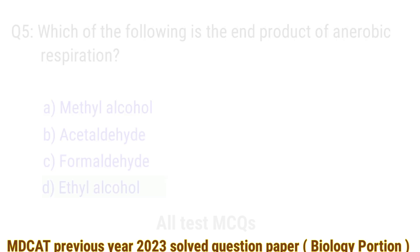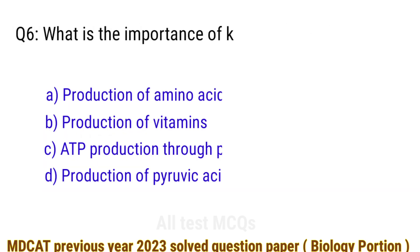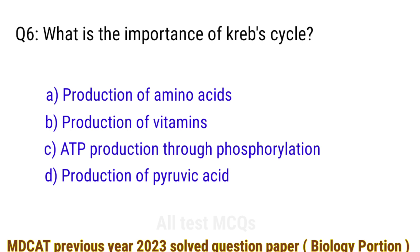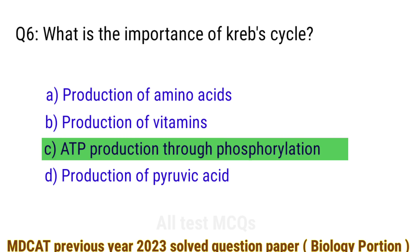Question number 6. What is the importance of the Krebs cycle? The right answer is option C: ATP production through substrate-level phosphorylation.